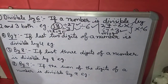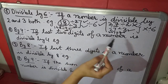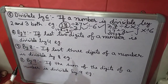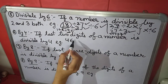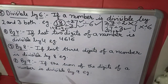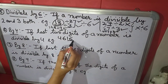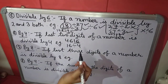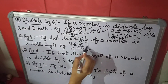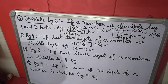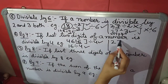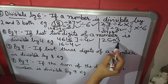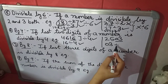Next is divisibility by 4. If the last 2 digits of a number are divisible by 4, then the complete number is divisible by 4. Example: 4,616 — we take the last 2 digits, that is 16. Since 16 is divisible by 4, this number is divisible by 4. Another example: we check the last 2 digits, which are 03. Since 03 is not divisible by 4, that number is not divisible by 4.